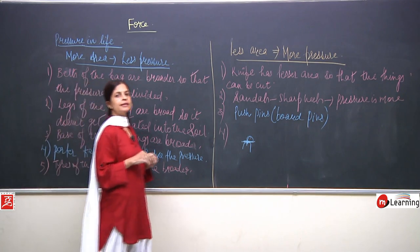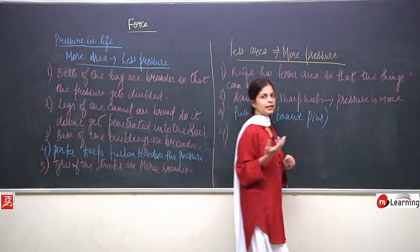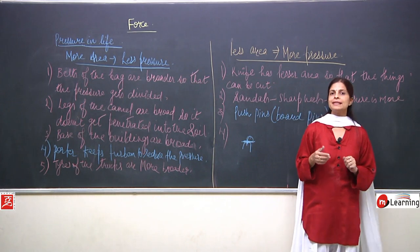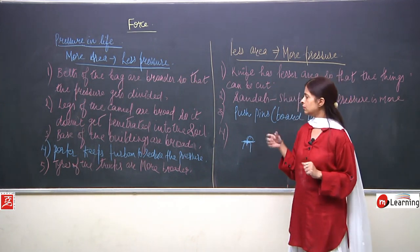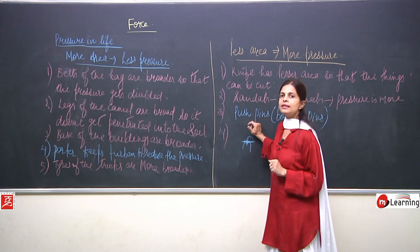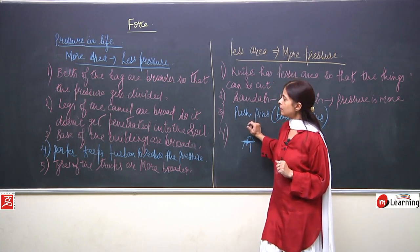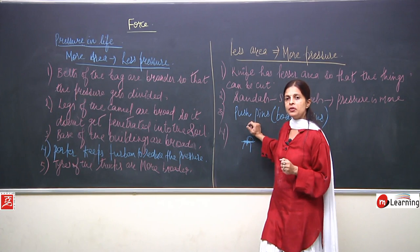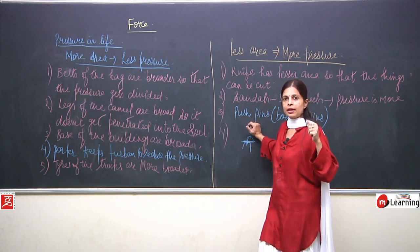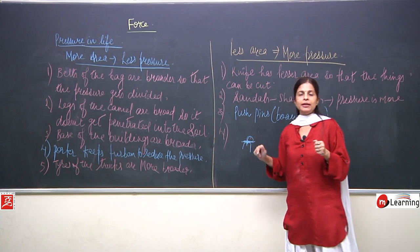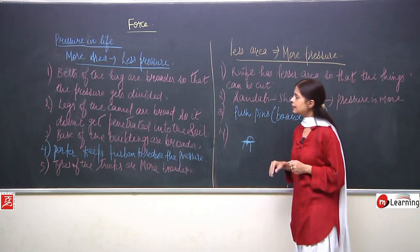The porter carries luggage and always ties a turban on his head so that the pressure of the luggage can be divided and distributed evenly. The next one is tires — already explained in detail. Now, less area and more pressure: knife has lesser area because pressure here should be more — we want the knife to penetrate.